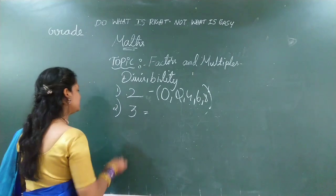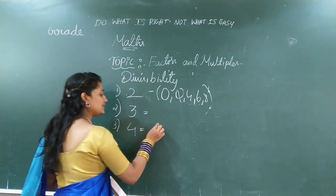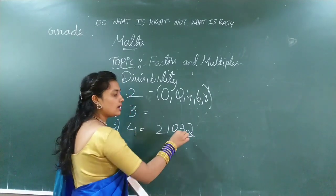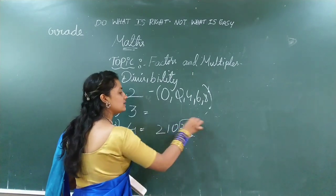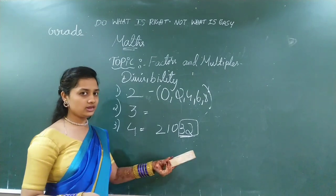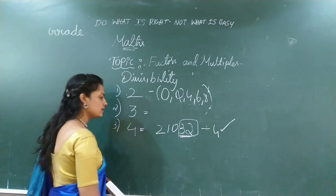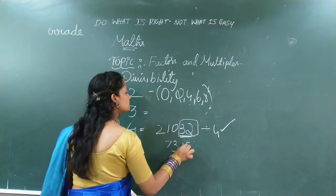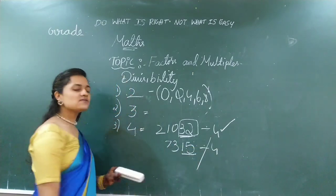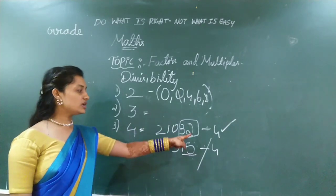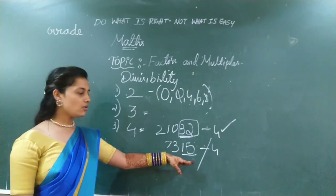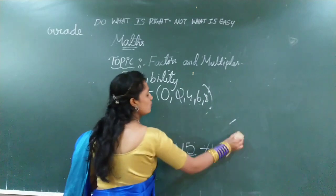So, let's go for divisibility by 4. For 4, you need to mainly concentrate on the last 2 digits. So, the last 2 digits are 32. Is 32 in the 4 times table? Yes, absolutely. So, this number is divisible by 4. Let's take one more example — the last 2 digits are 15. Is 15 in the 4 times table? No. So, this number is not divisible by 4. To check divisibility by 4, you check the last 2 digits — if those 2 digits are divisible by 4, the whole number is divisible by 4.